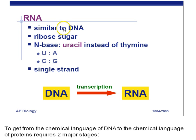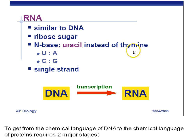RNA is very similar to DNA. It has a ribose sugar instead of deoxyribose in the backbone of the RNA molecule. The nitrogen bases are the same for adenine, guanine, and cytosine. However, there is one difference: there's uracil instead of thymine. There is no thymine in RNA. Anytime you see thymine, you know you're dealing with DNA. Anytime you see uracil, you know you're dealing with RNA.